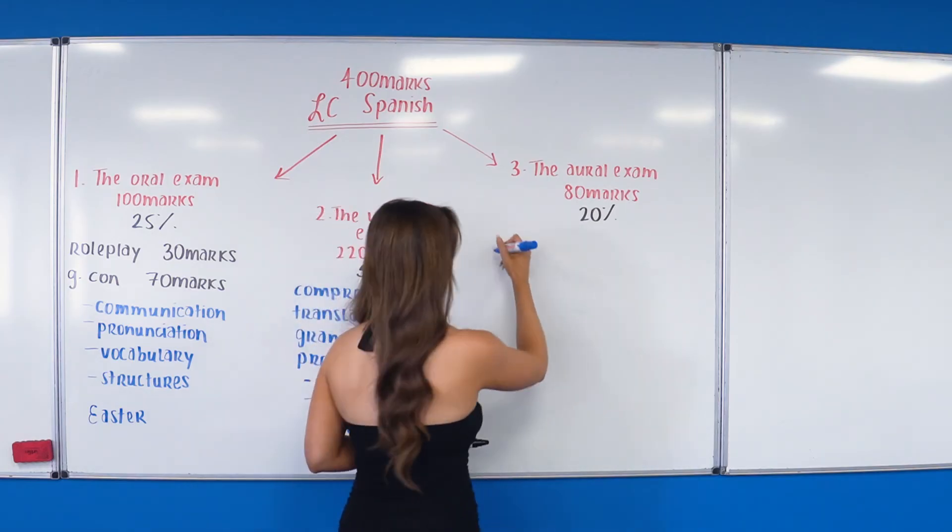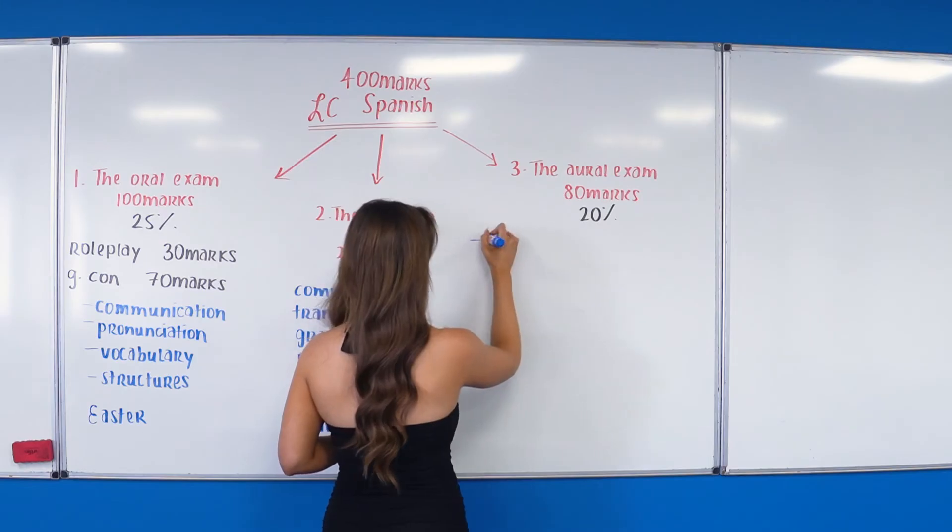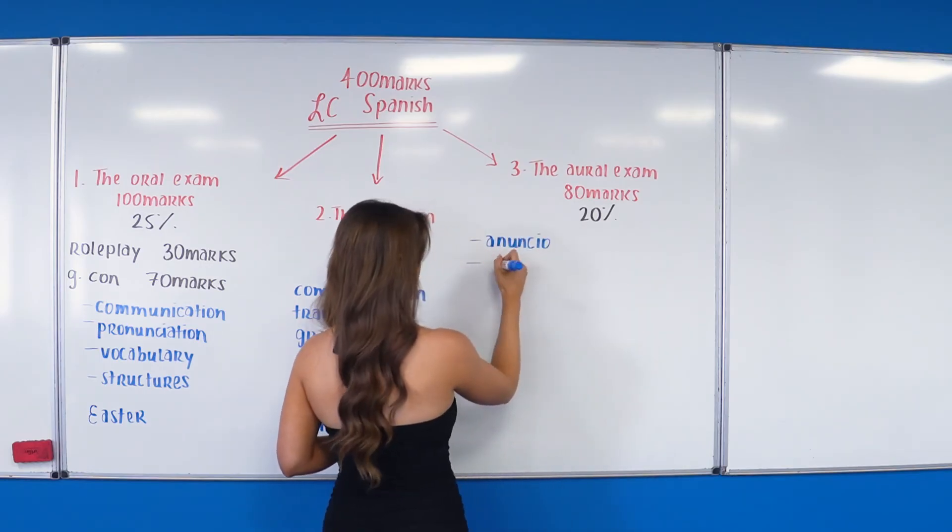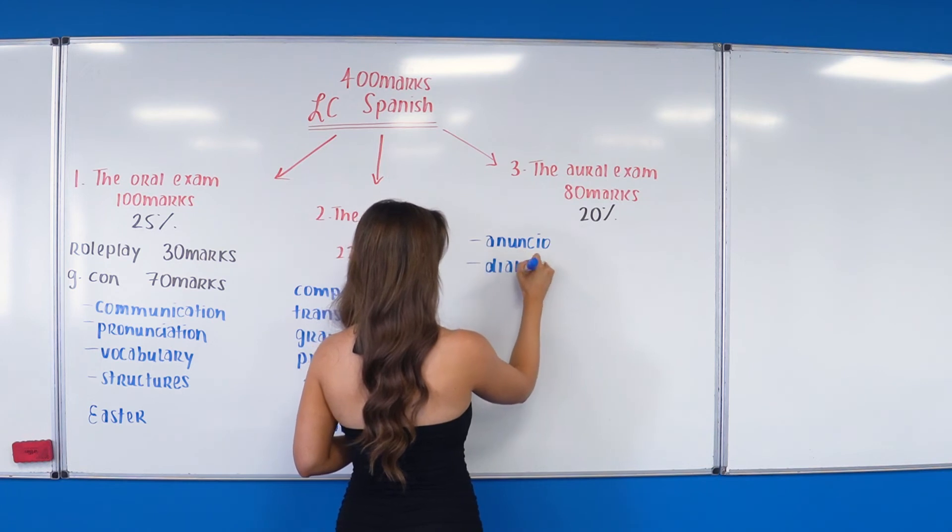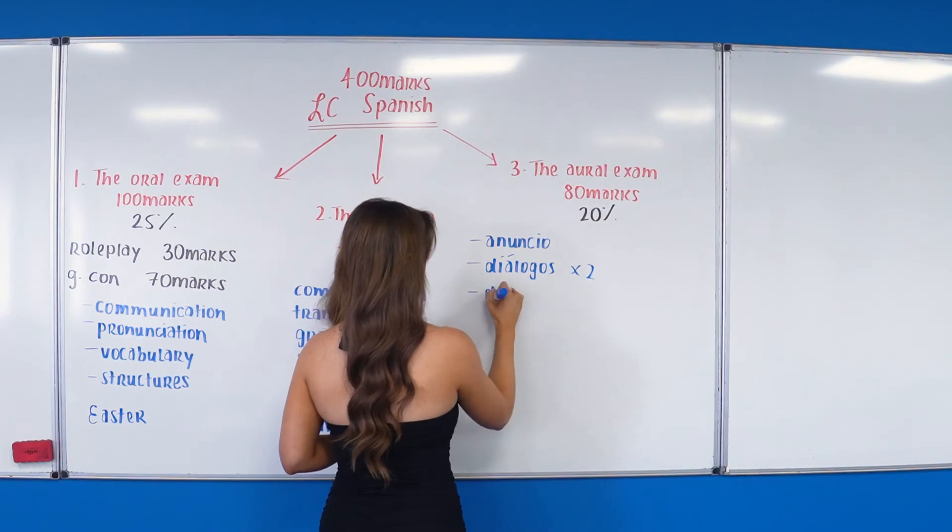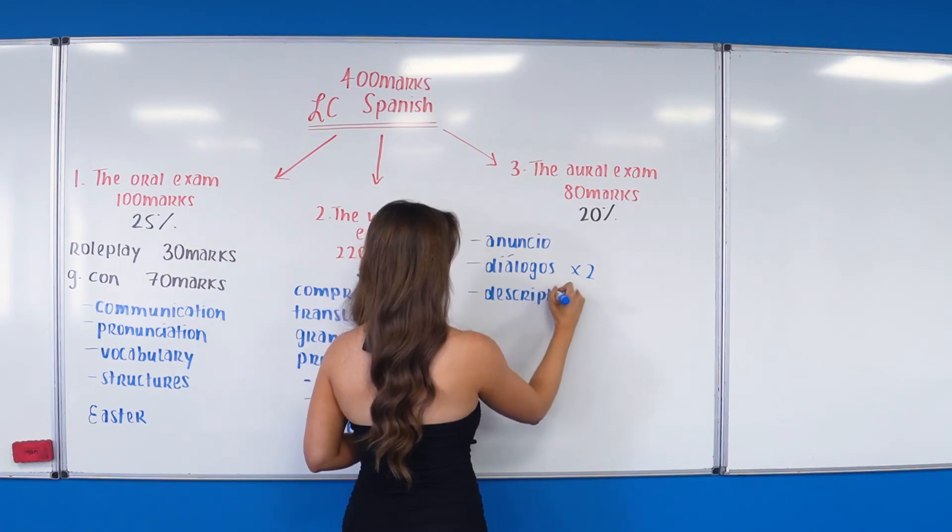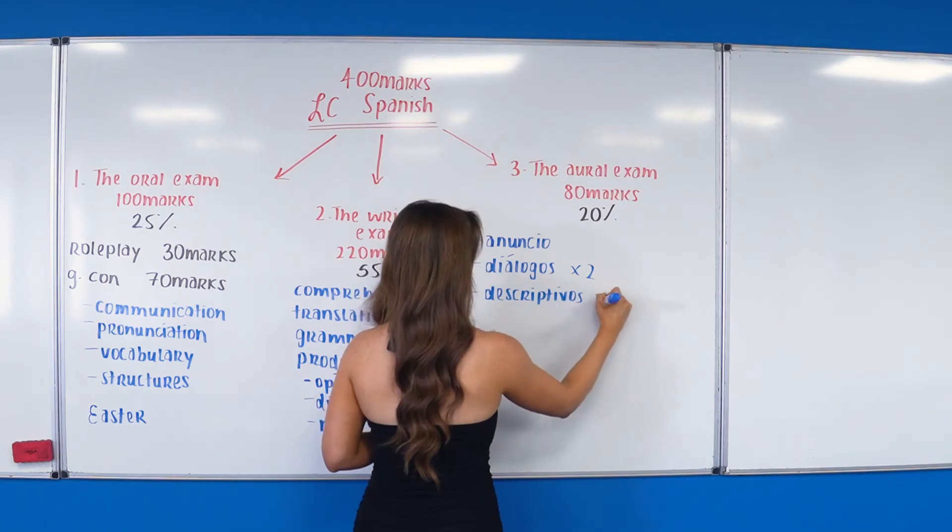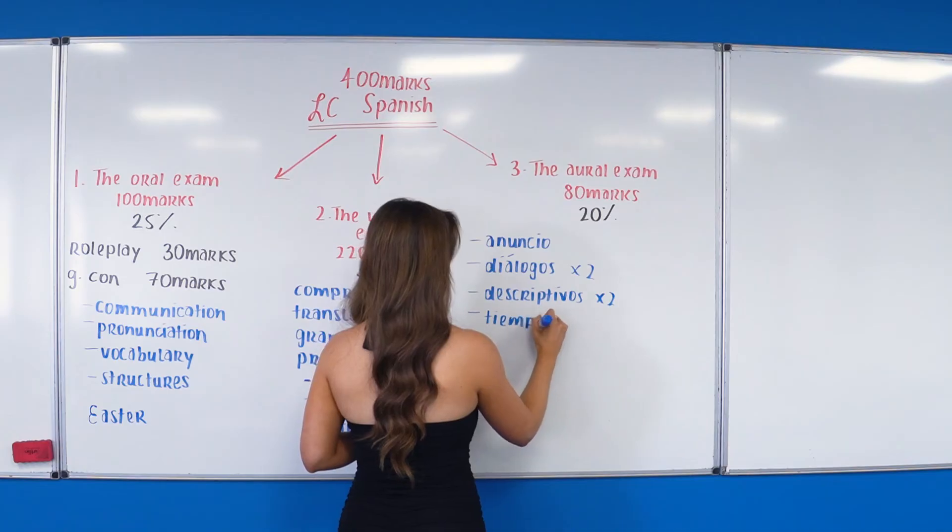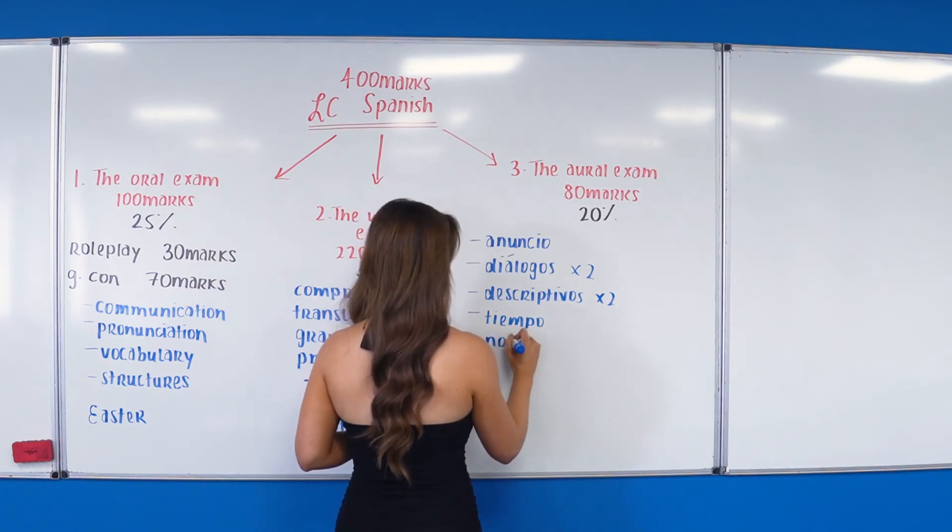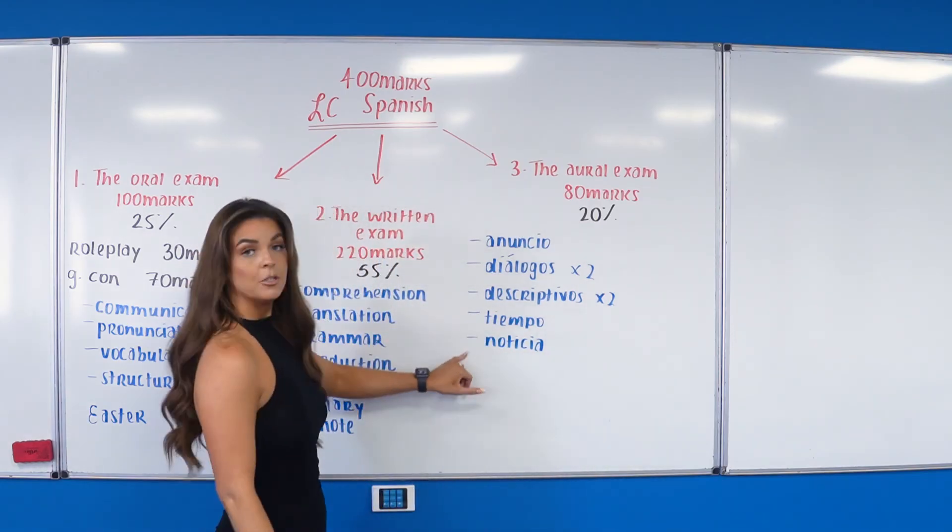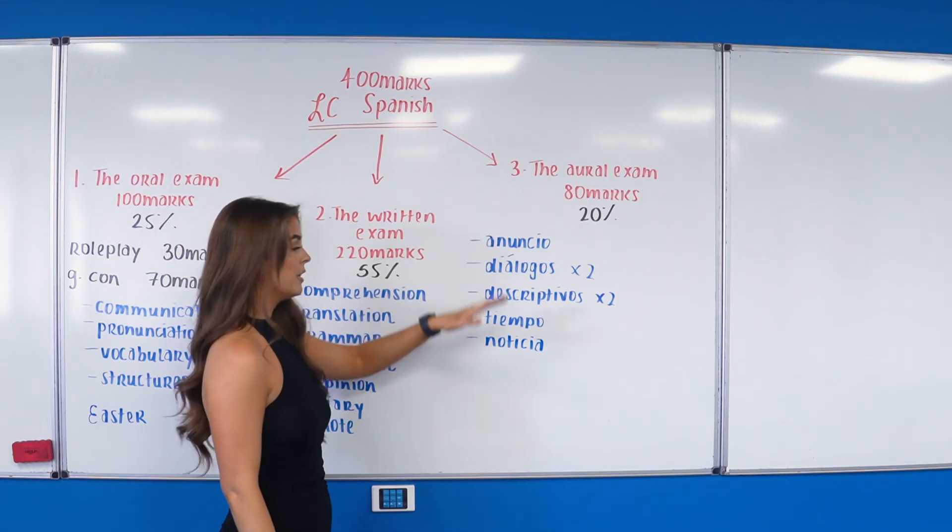The exam has seven sections. So it's going to be an announcement—un anuncio—two dialogues—dos diálogos—two descriptive passages—dos pasajes descriptivos—the weather—un informe sobre el tiempo—and a news piece—una noticia.